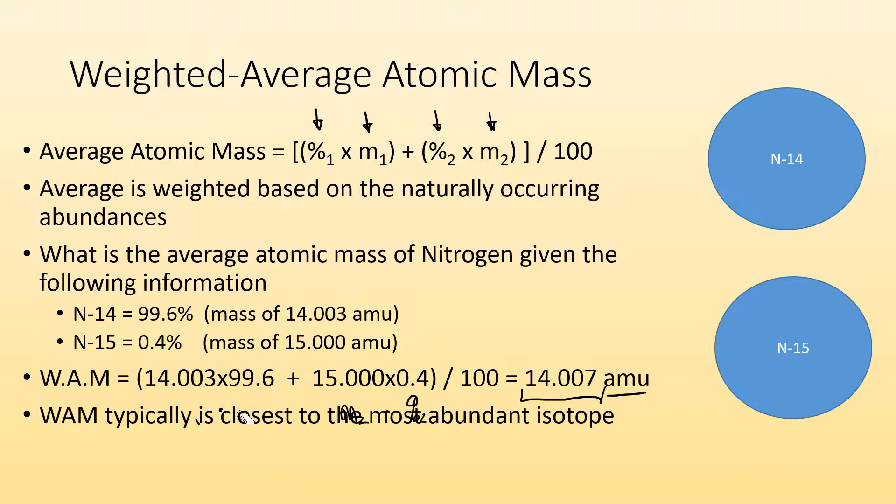There's also a pattern here that most of the time, the average atomic mass is closest to the most abundant isotope. So you can see almost all of the nitrogen is nitrogen 14. And you can see the mass is really close to that one compared to 15. So it's not just a straight average.